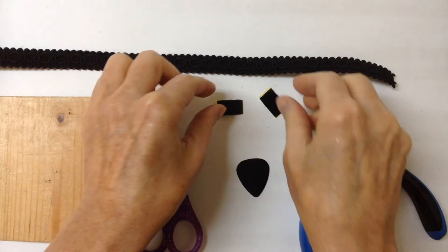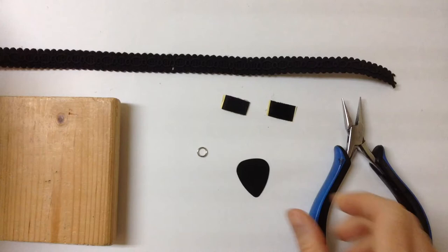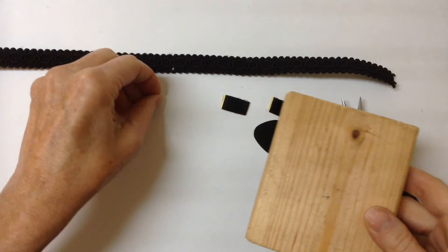To make the guitar pick choker you're going to need a guitar pick, some Velcro (I have the kind with adhesive on the back), a jump ring, scissors to cut the Velcro, flat pliers, a block of wood, and a hand drill.